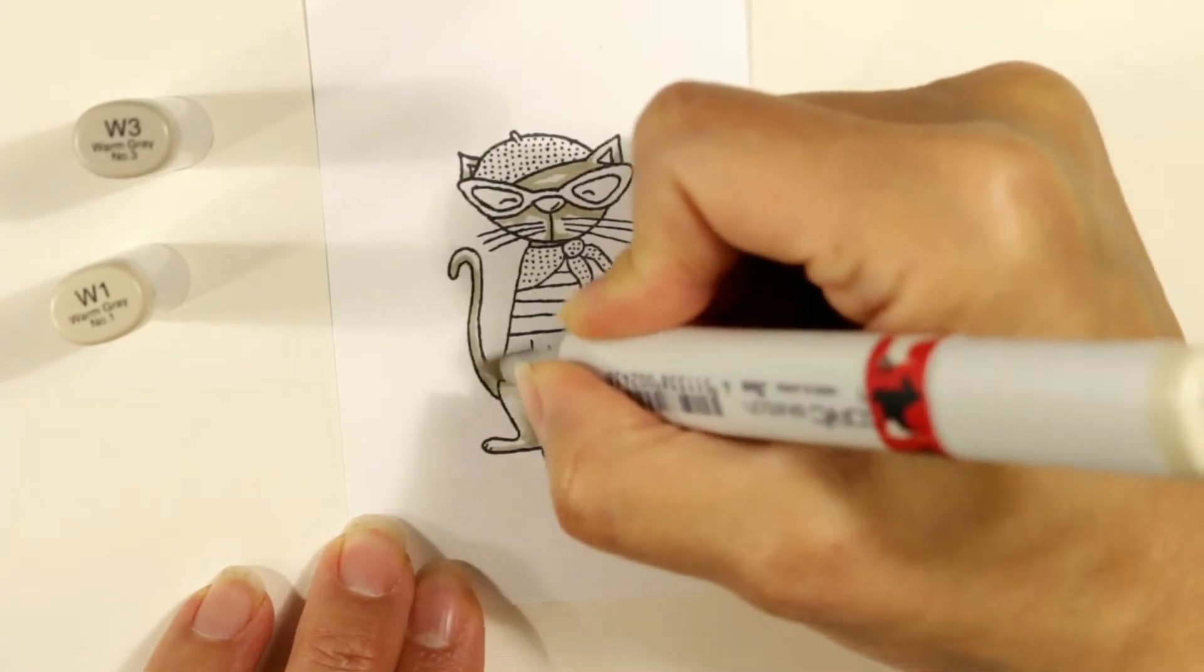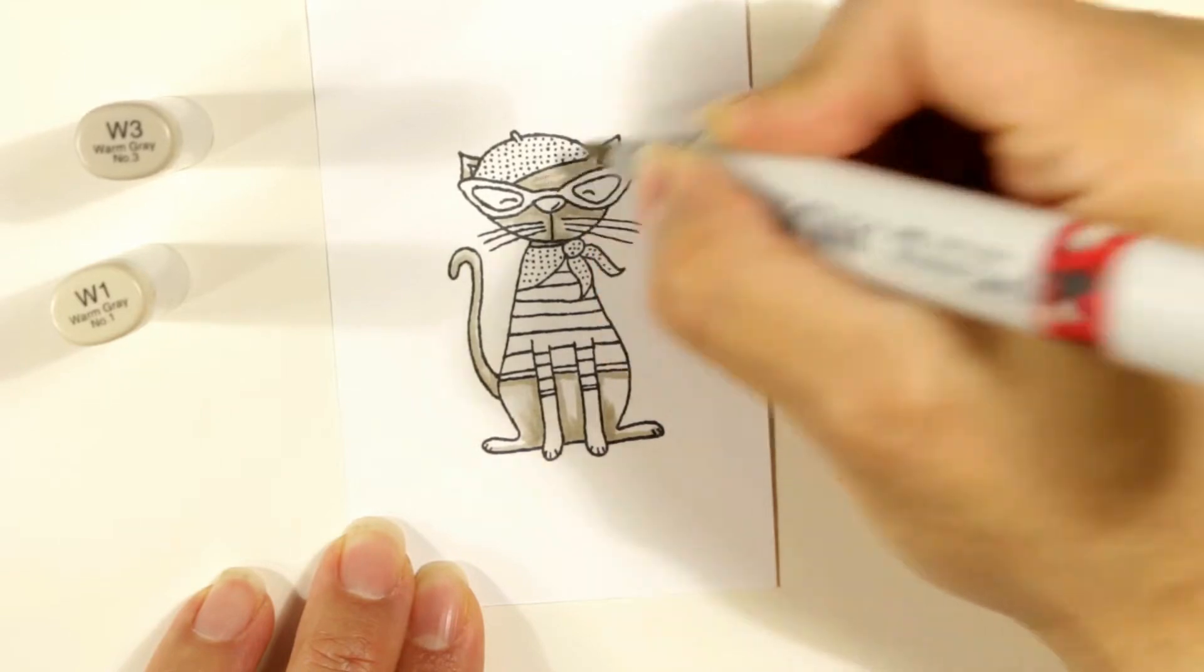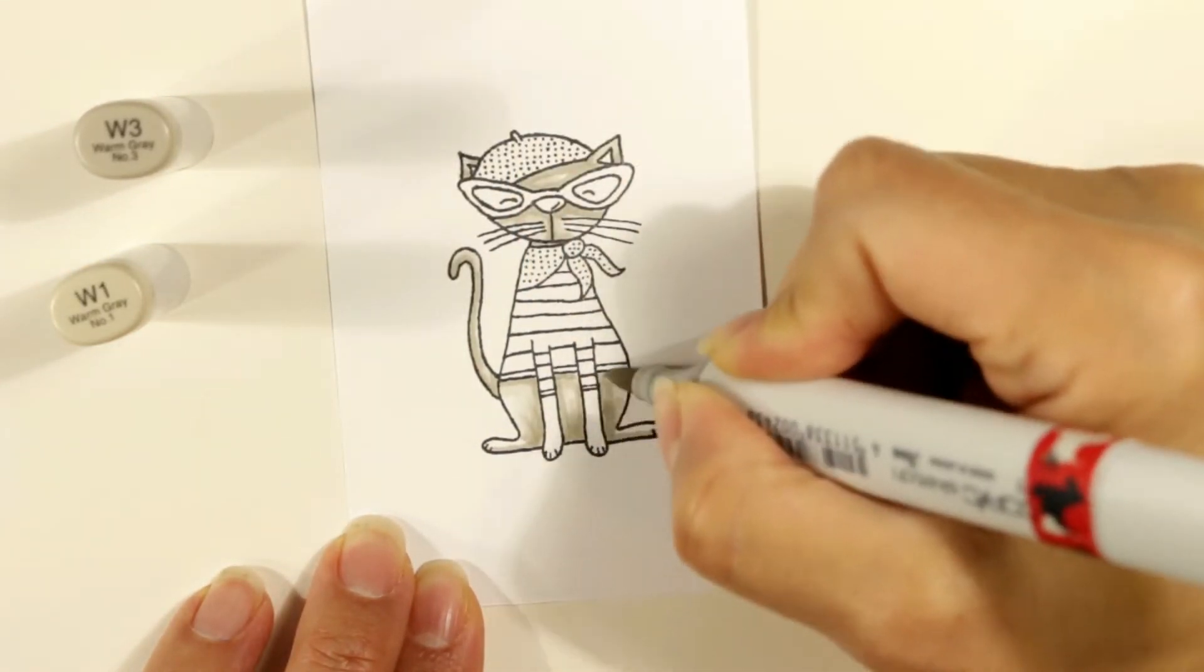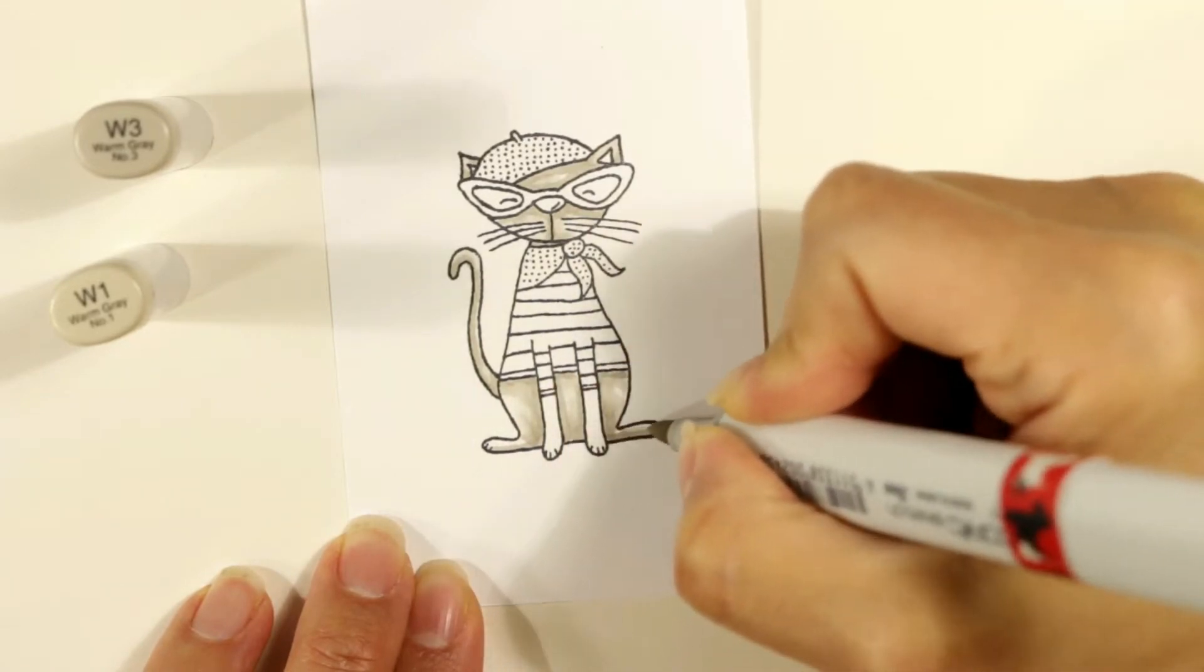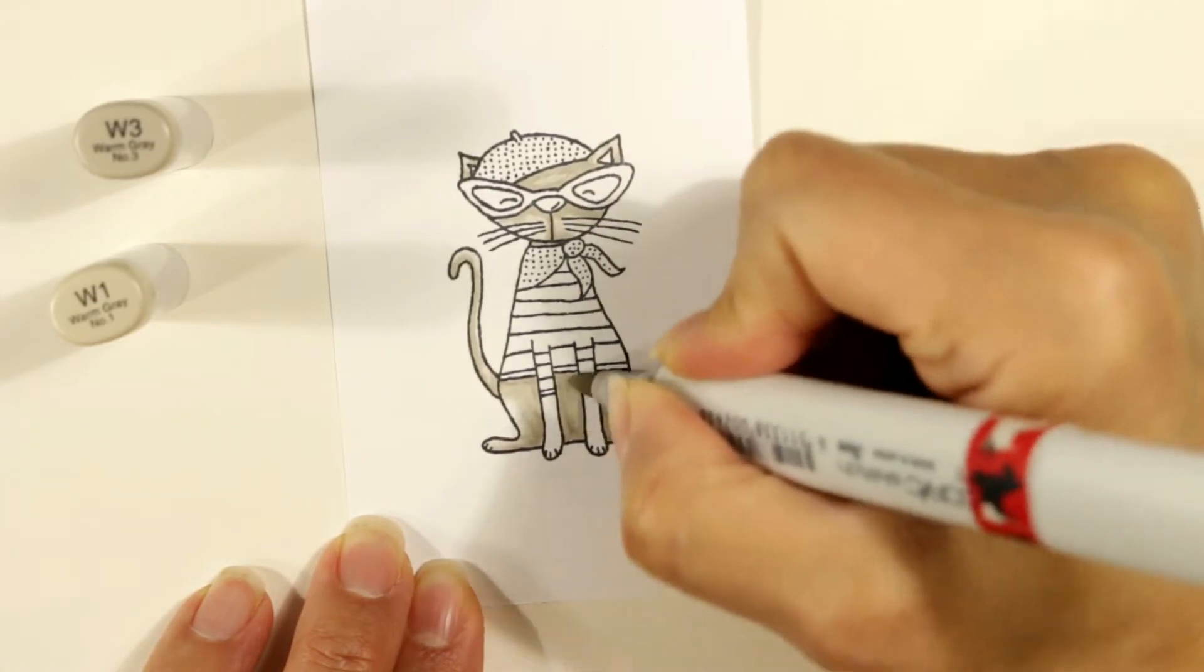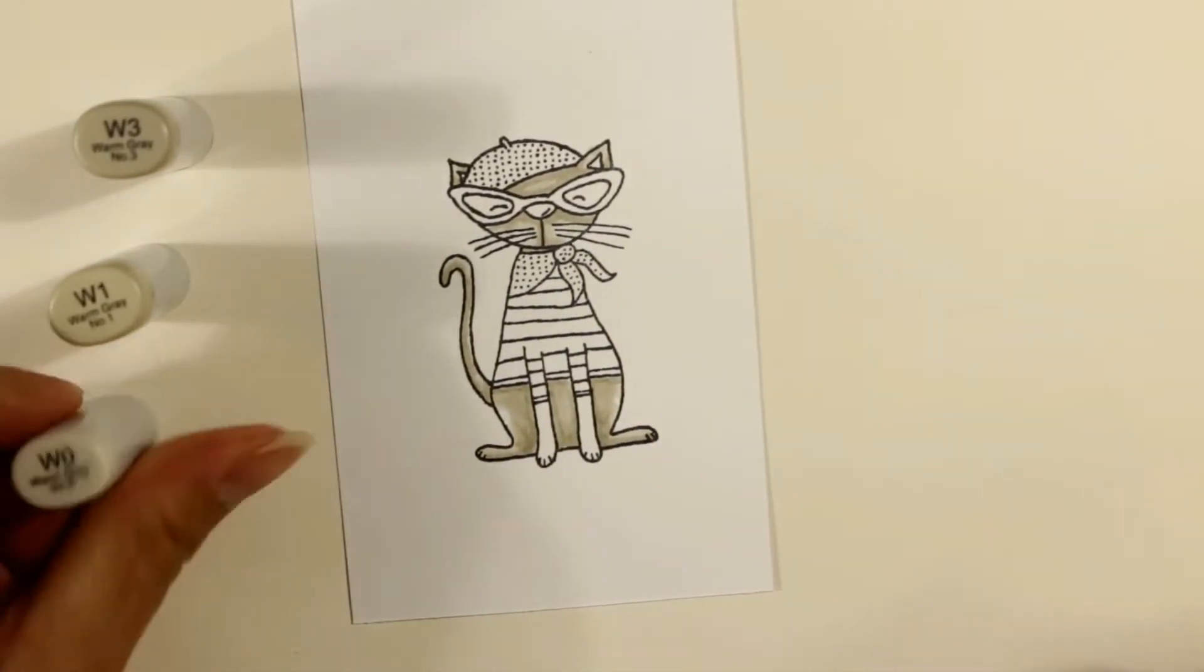I move on to a lighter warm gray, just to blend out to the white areas of the kitty. This is a pretty small image, and it's pretty detailed. So I'm just doing some really quick and easy blending, just to give it a little bit of dimension. But I'm not worried about flicking too much for texture and that sort of thing.